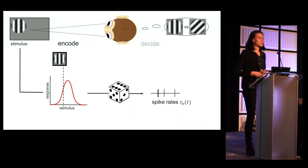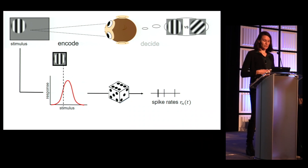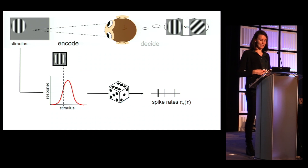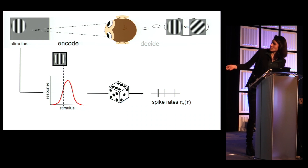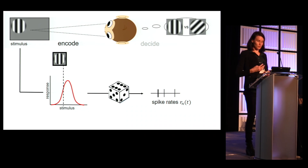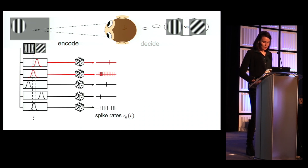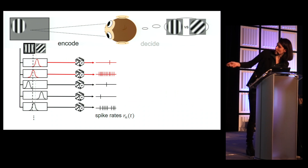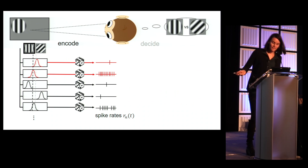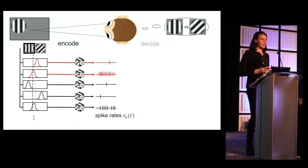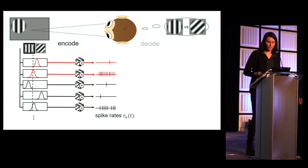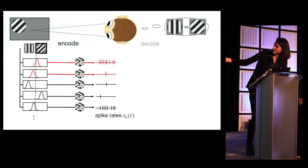First of all, information needs to be encoded. There are cells that vary their response with respect to different stimulus orientations. A common way to model this encoding process is with a stimulus response function and a stochastic process that captures trial-to-trial fluctuations. Given such a population of stochastic orientation-tuned cells and two different stimuli that have to be differentiated, only a few cells will actually be informative by changing their response as the stimulus changes.